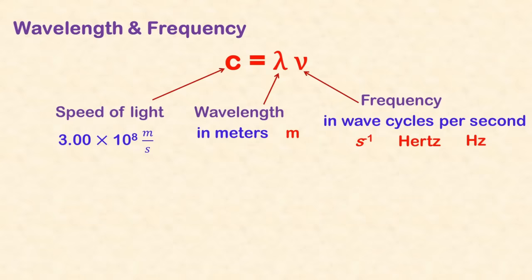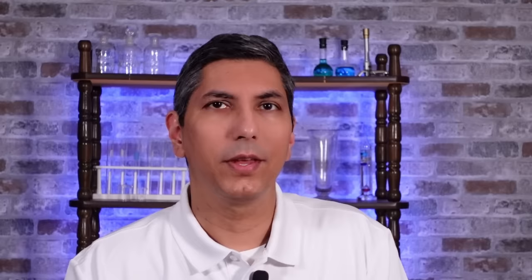Light interacts with matter. The wavelength of light, lambda, multiplied by its frequency, nu, equals the speed of light. And if you multiply that frequency by Planck's constant, you find the energy of a single photon of that light.